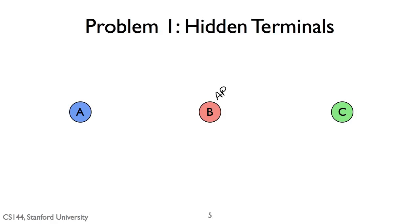And so a hidden terminal is when two nodes, say, A and C, both try to transmit to a receiver, or it could be even to adjacent receivers. And the receivers can hear both of them. So B can hear both A and C, but A and C cannot hear each other. So A is hidden to C, and C is hidden.